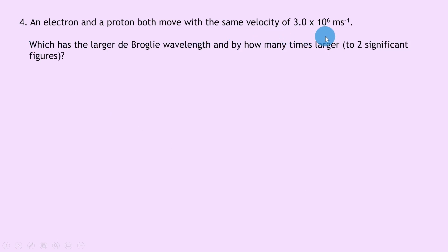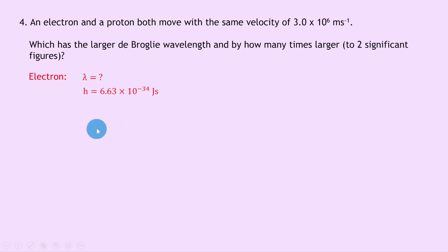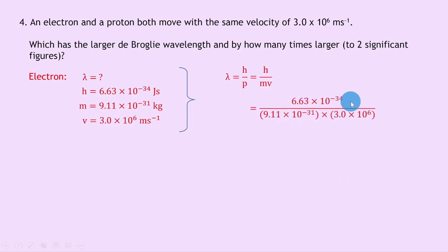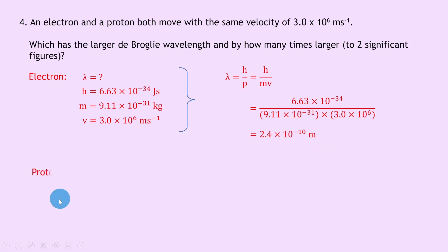Question four says an electron and a proton both move with the same velocity of 3.0 times 10 to the 6 meters per second. Which has the larger de Broglie wavelength, and by how many times larger to two significant figures? For the electron: h is 6.63 times 10 to the minus 34 joule seconds, mass is 9.11 times 10 to the minus 31 kilograms, v is 3.0 times 10 to the 6 meters per second. Lambda equals h over mv gives 2.4 times 10 to the minus 10 meters.